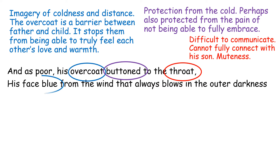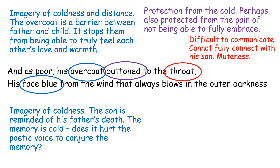The next line continues the use of cold and remote imagery in his face blue. That imagery of coldness shows that every time this son sees the father in his memories he is reminded of his father's death. It could also suggest a coldness in the memory — perhaps it hurts the poetic voice to conjure that memory to see his father again, because all he can see is that coldness, that chasm of distance between him and his father. Almost like his father's face is a reminder that his father was not the father he should have been.